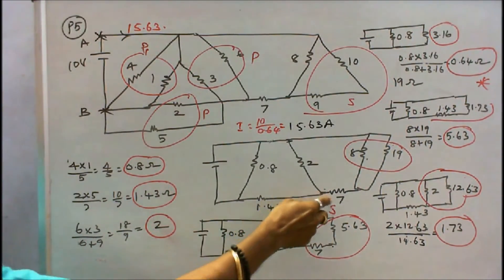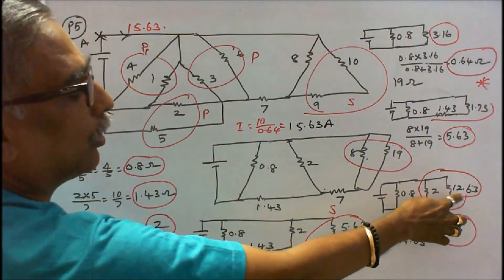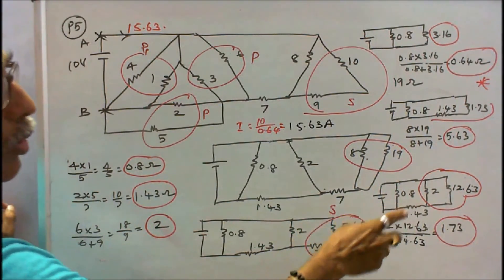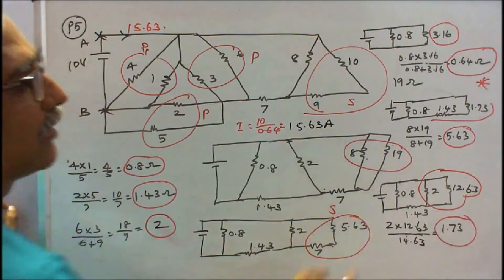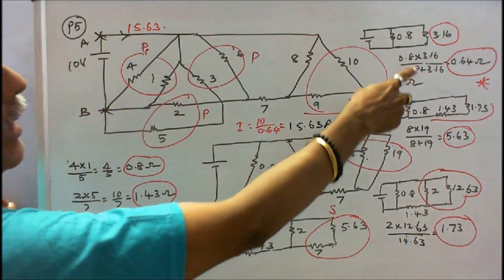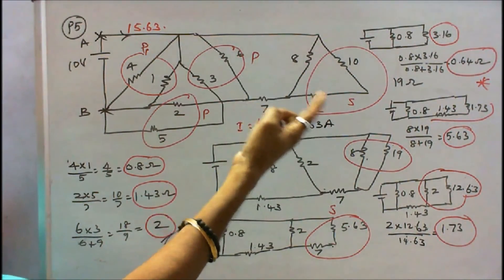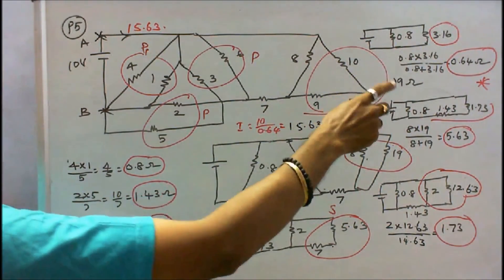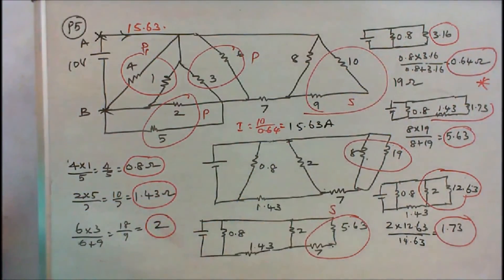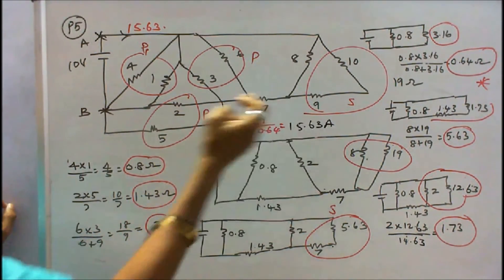The 5.63Ω and 7Ω are in series = 12.63Ω. Then 12.63Ω in parallel with 2Ω: 2×12.63/(2+12.63) = 1.73Ω. This 1.73Ω in series with 1.43Ω gives 3.16Ω. Then 3.16Ω in parallel with 0.8Ω: 0.8×3.16/(0.8+3.16) = 0.64Ω. Total resistance across A-B = 0.64Ω. Current I = 10 / 0.64 = 15.63 amps.